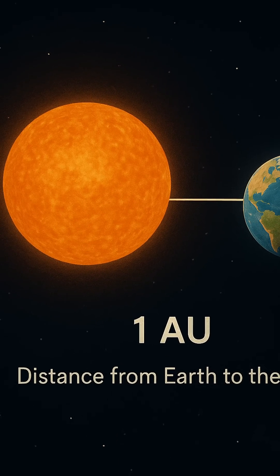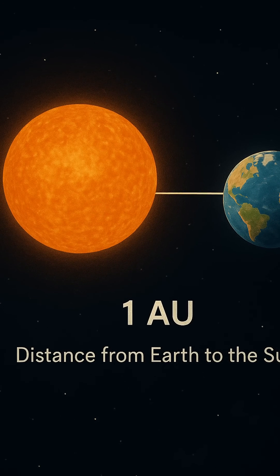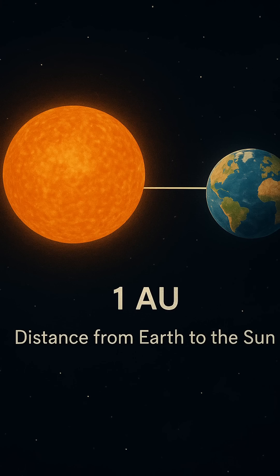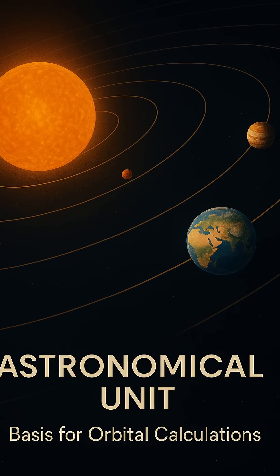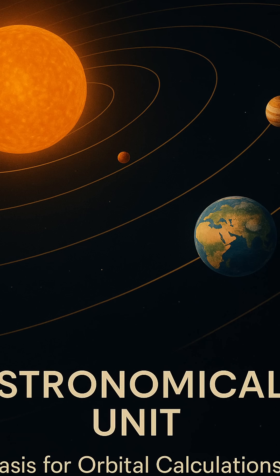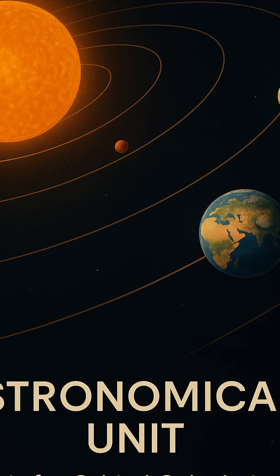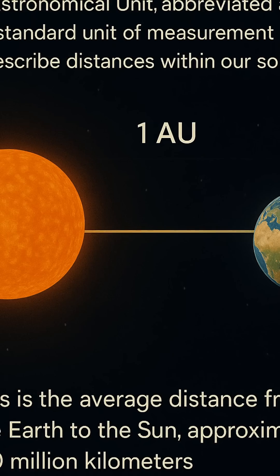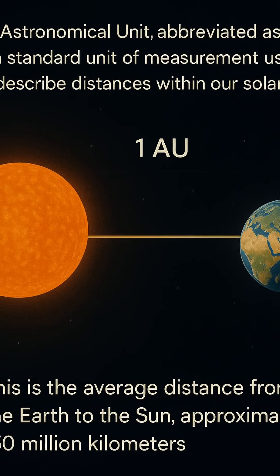This unit became essential because talking about kilometers or miles in the context of planetary orbits quickly becomes unwieldy. For example, instead of saying Mars orbits the Sun at about 227.9 million kilometers, astronomers can simply say it's about 1.52 AU from the Sun.